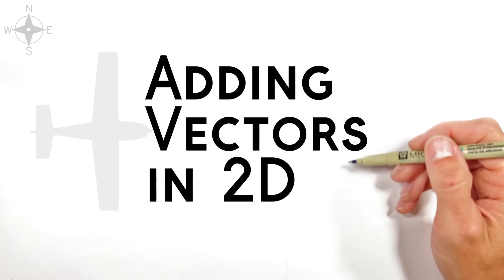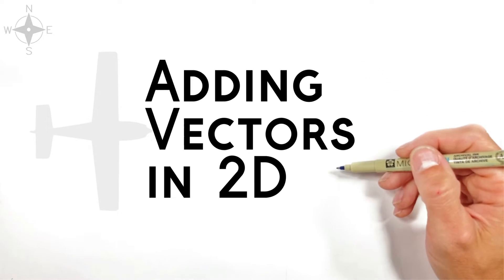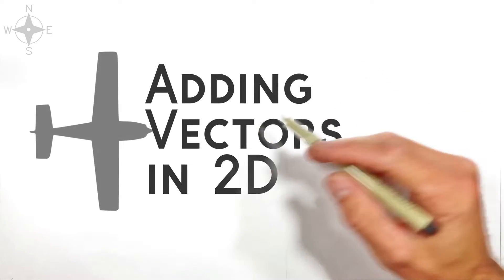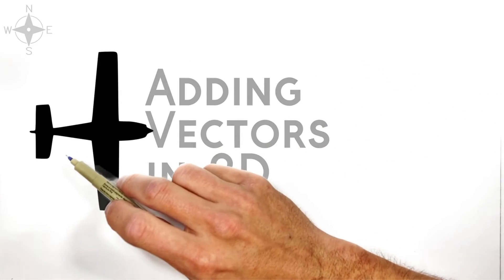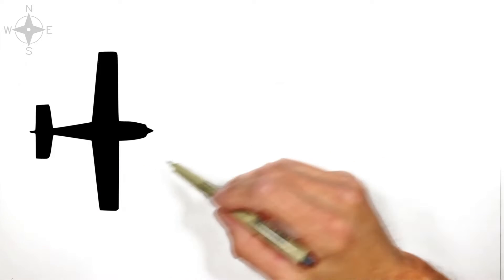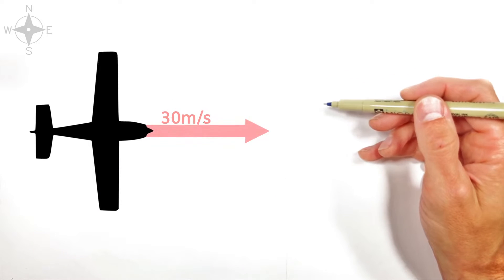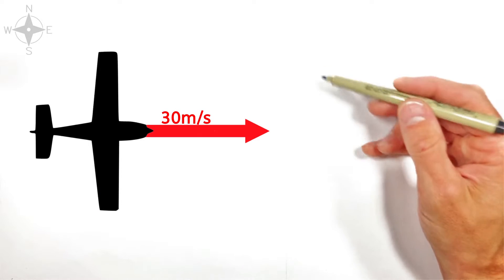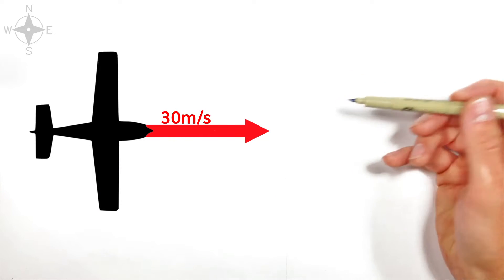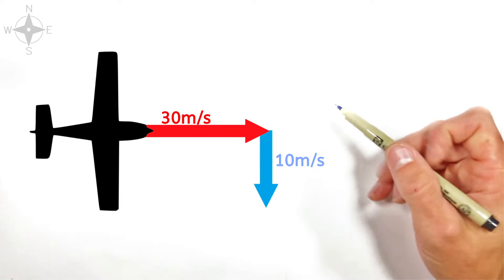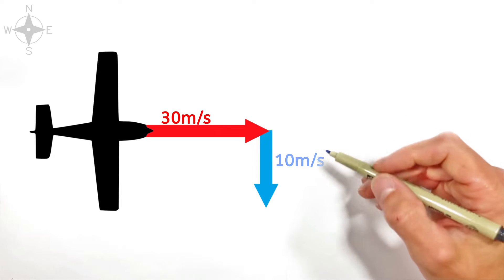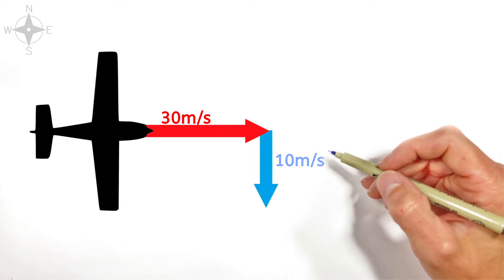Today I want to show you how to add together vectors in two dimensions. To do that we're going to take a look at an airplane which is flying through the air at 30 meters per second, and then we're going to throw in some wind that's blowing this airplane around at 10 meters per second.